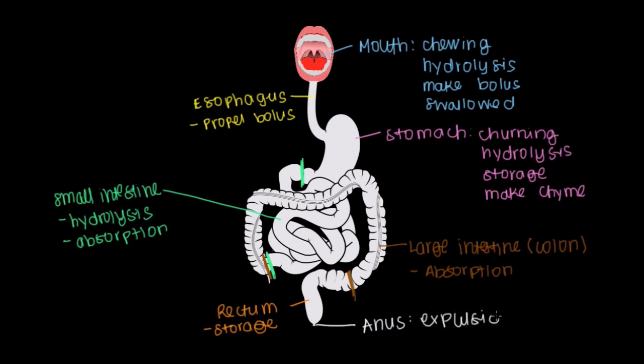Those are all the key components of our gastrointestinal tract. There are some other accessory organs involved in digestion, and we'll have videos to talk about them as well. Those include things like the liver, the gallbladder, and the pancreas, which will come up in subsequent videos.